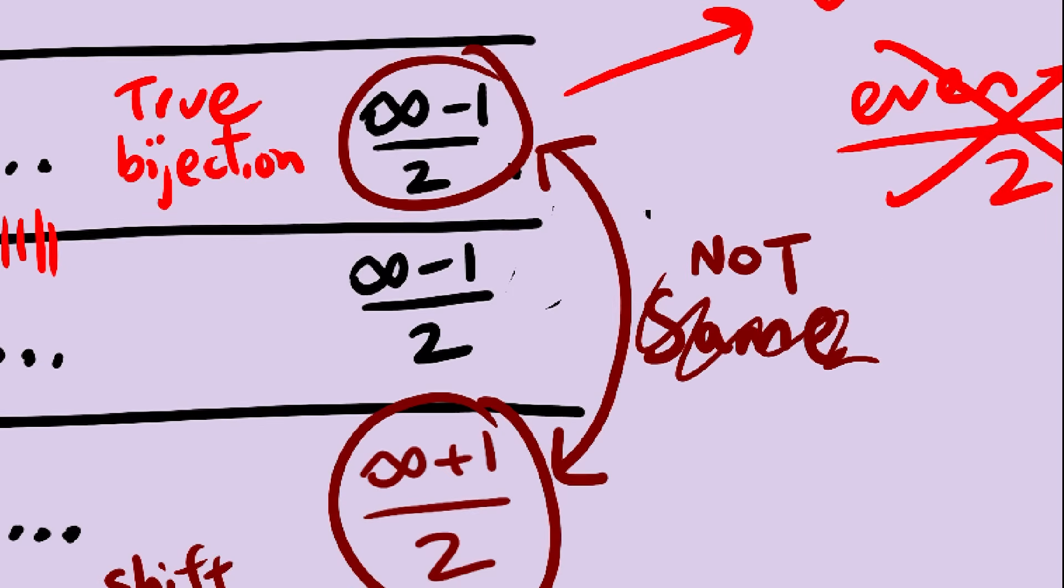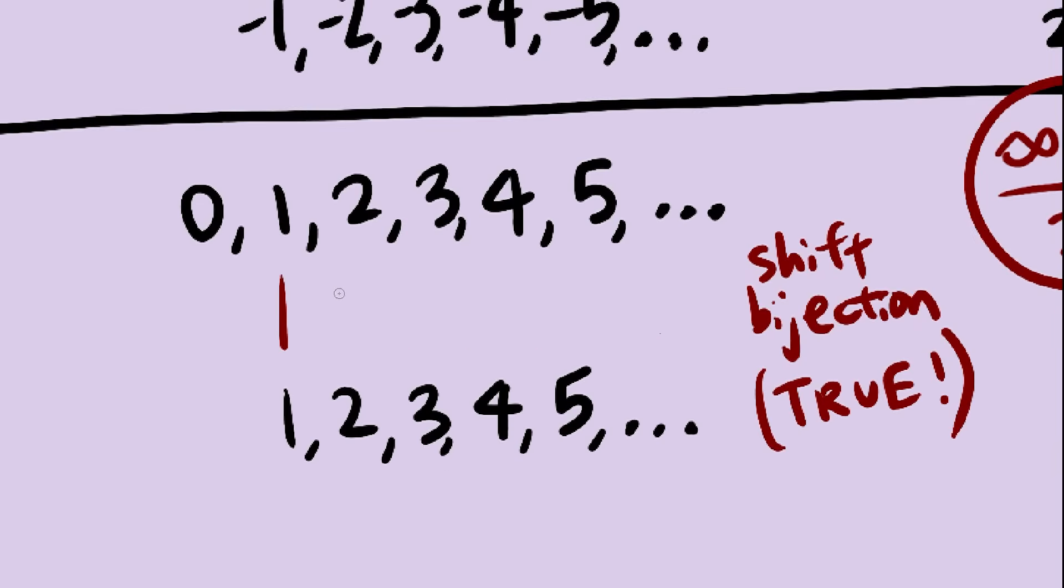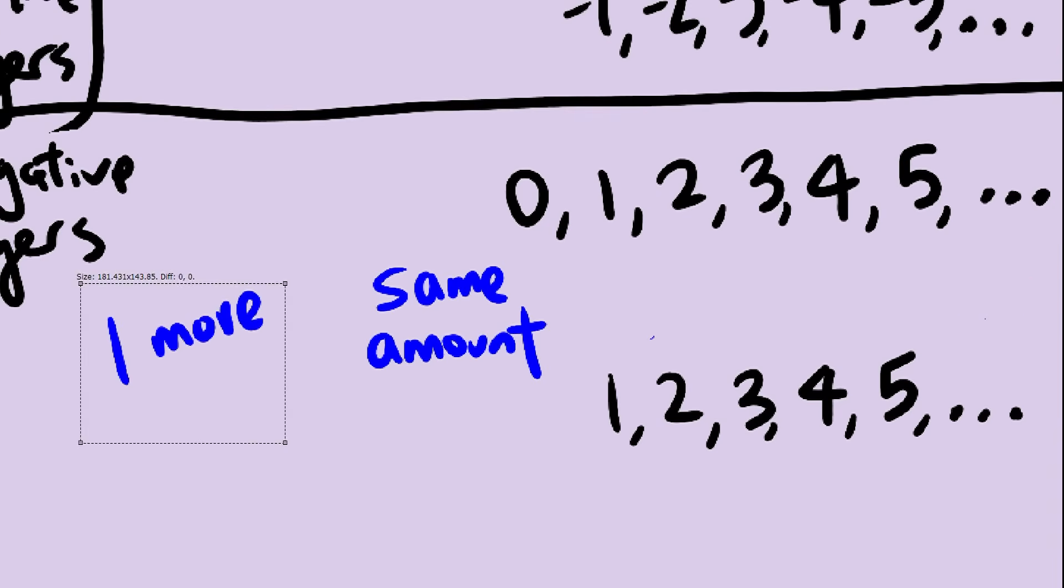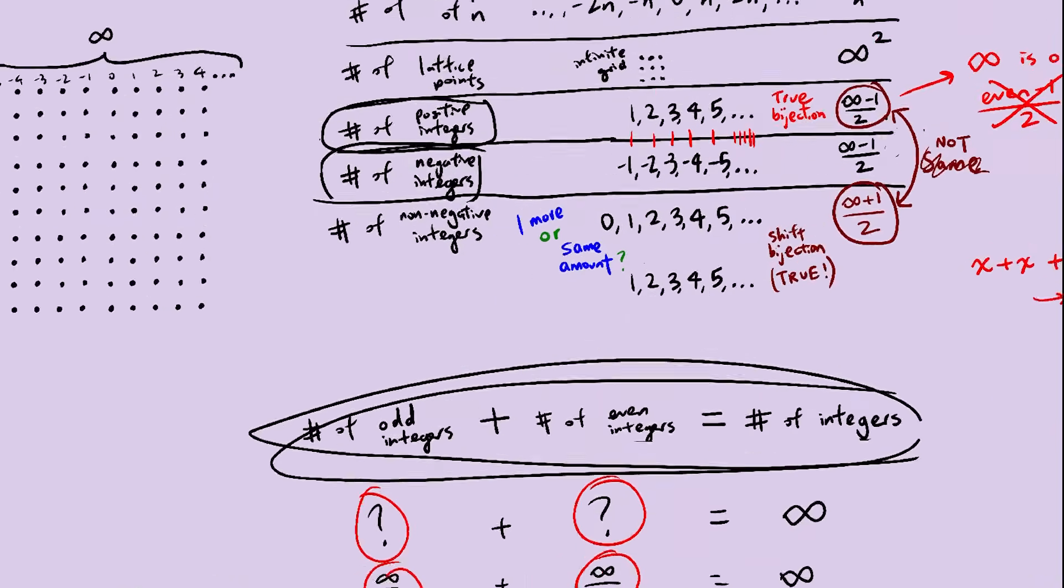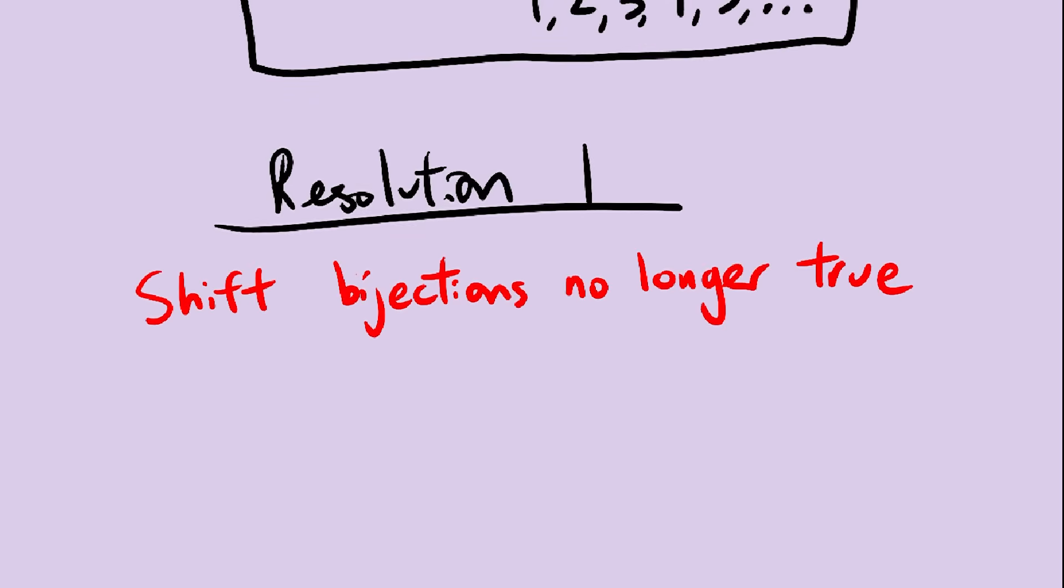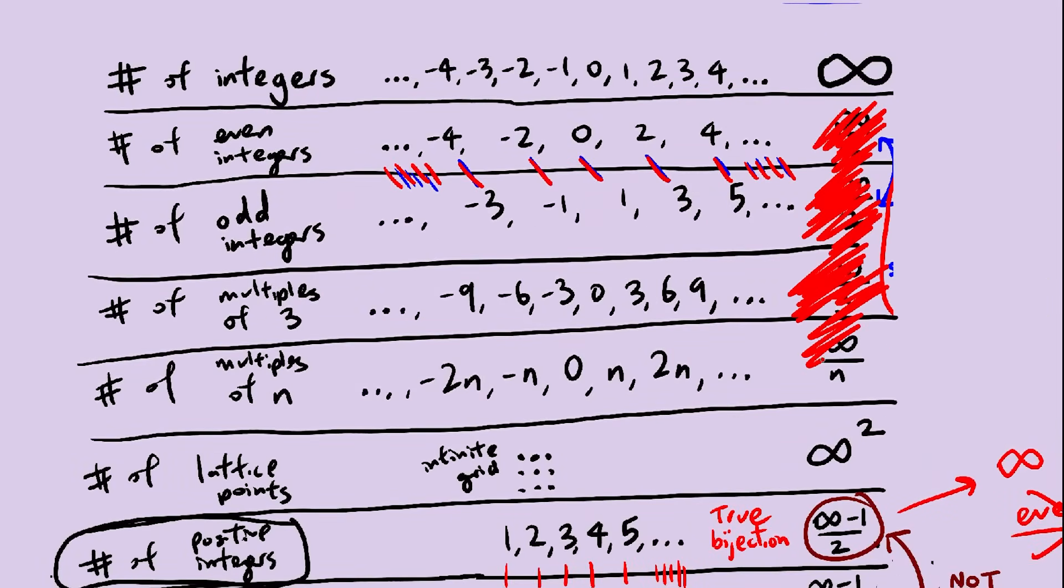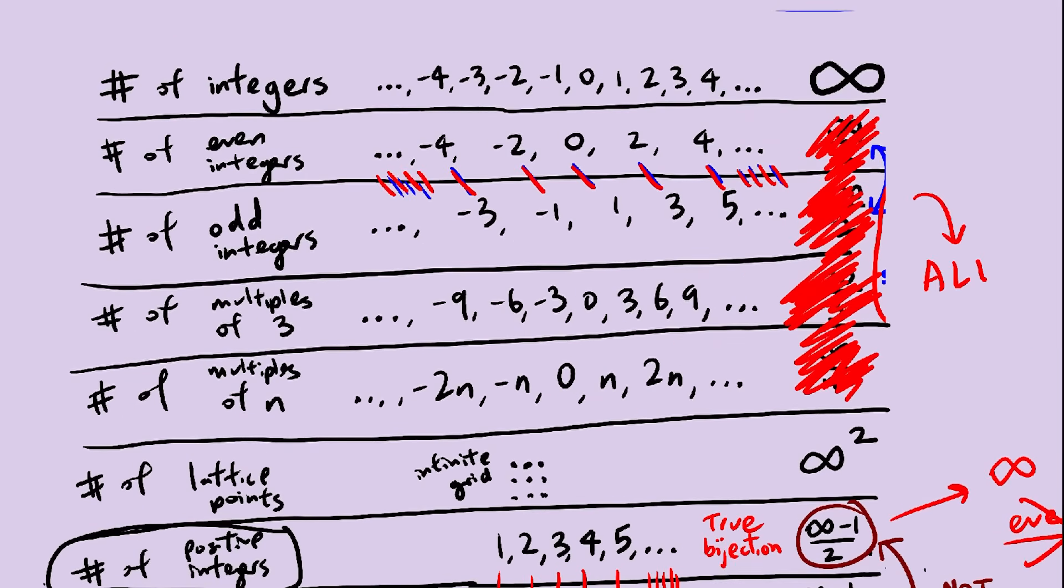Adding an integer has the same effect as a shift bijection, but adding an integer adds 1 to the count, while shift bijections don't change the count at all. So which one of these is right? Are there more non-negative integers than positive ones, or are there the same amount? There are, again, a few ways to resolve this paradox. The first one I thought of is no more shift bijections. They aren't true bijections anymore. So, there are more non-negative integers, which does make more sense. The problem with this, of course, is that we lose everything that comes with shift bijections, which is a whole lot.